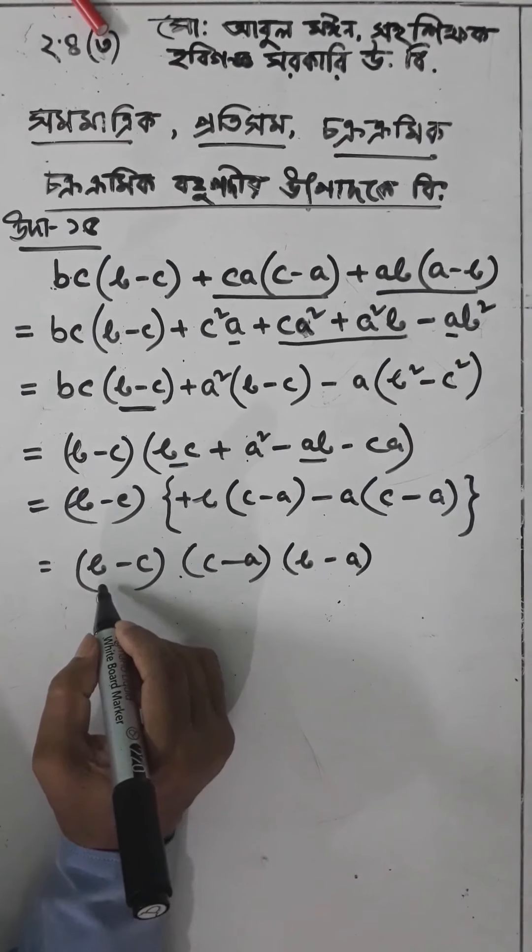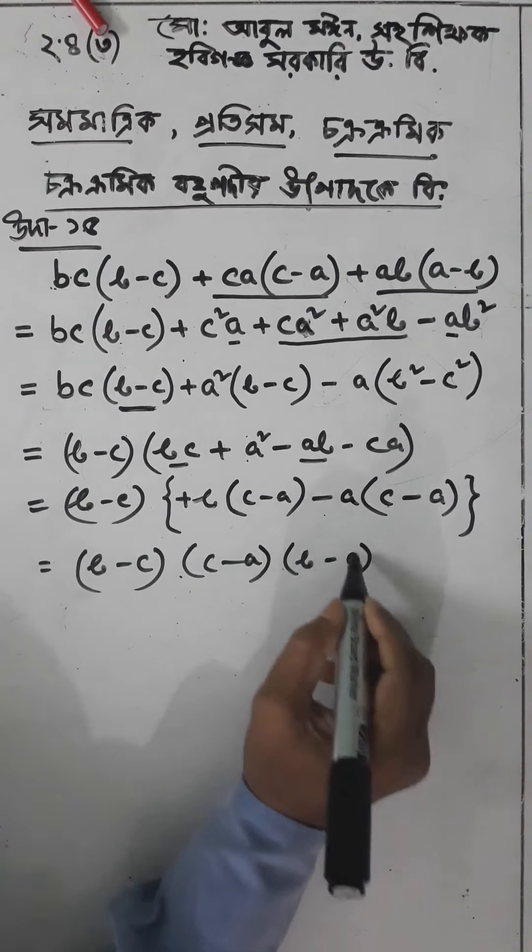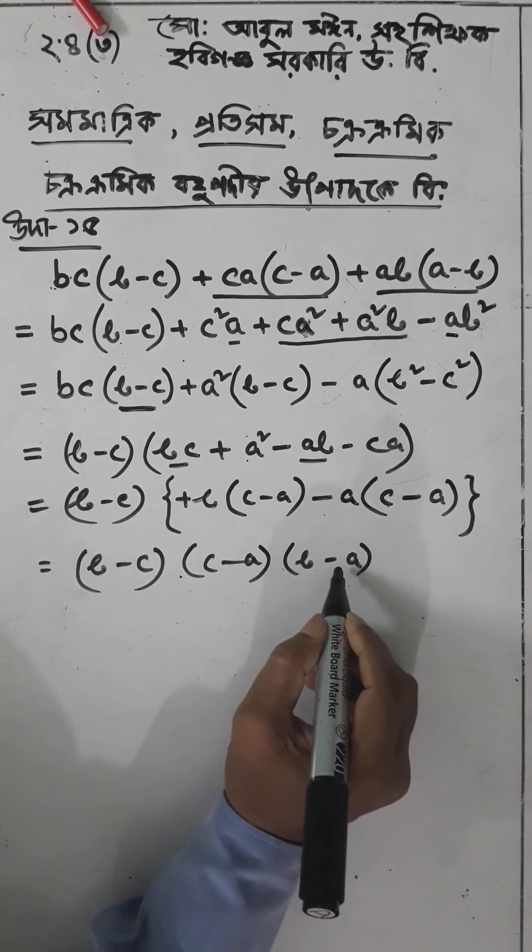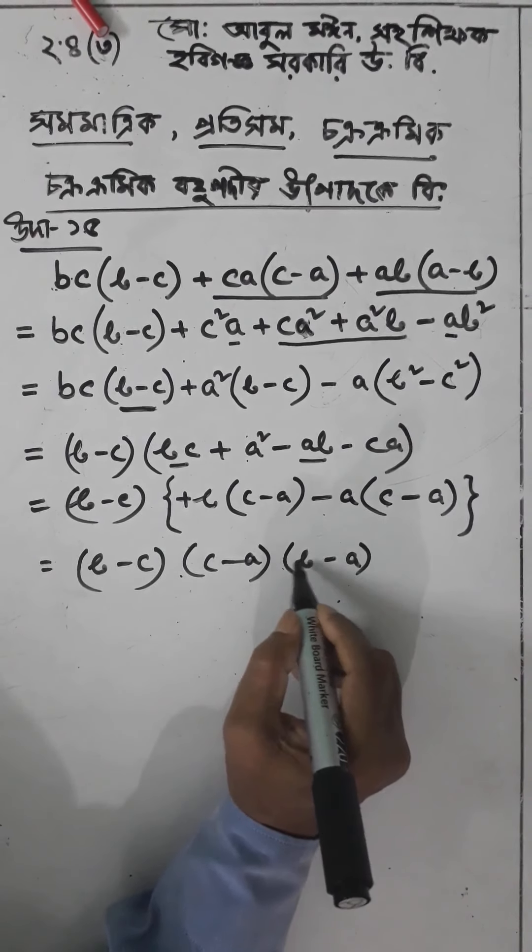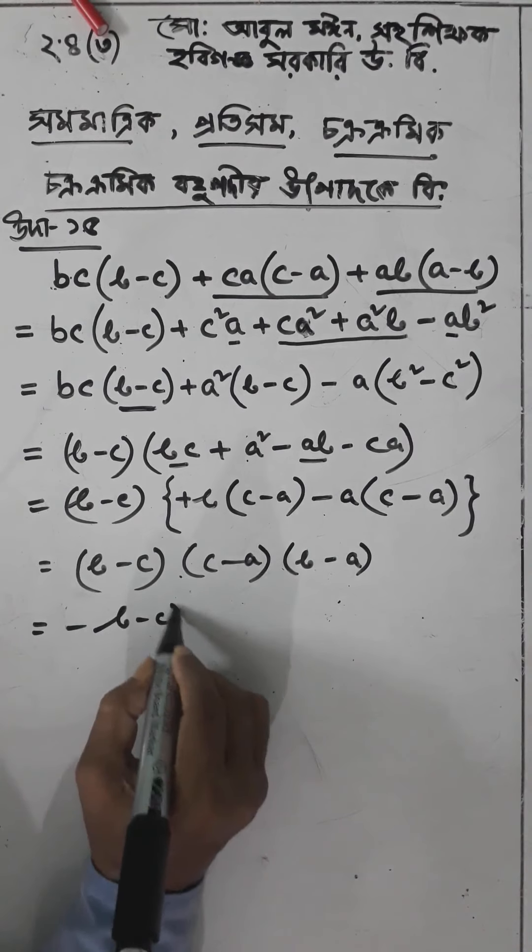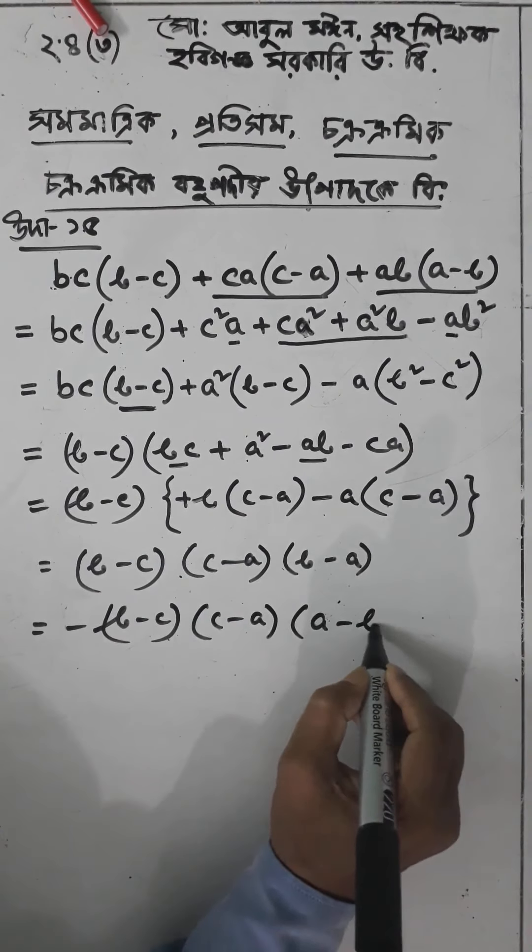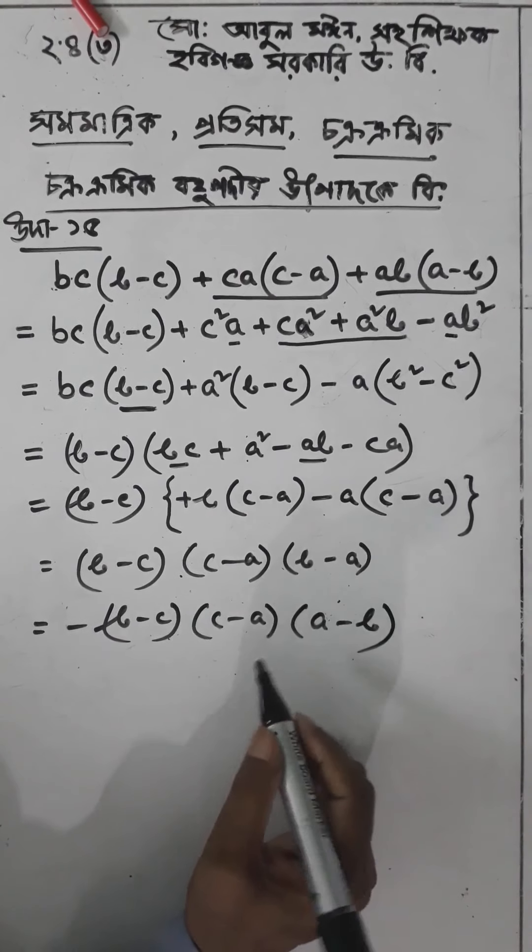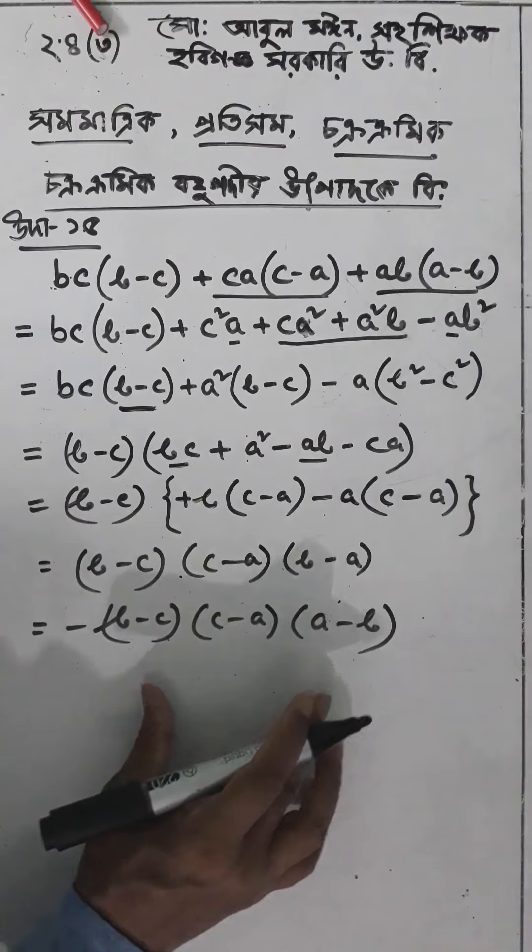This is our chakramic rashi. To write it as a minus b, we get a minus b, b minus c, c minus a into a minus b. This is the utpadok bishleshito rup (factored form).